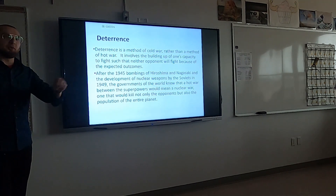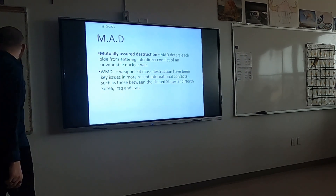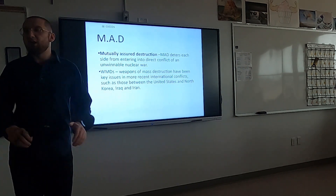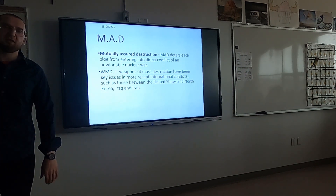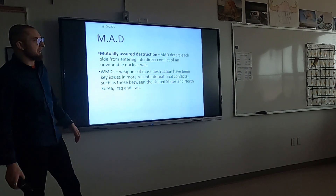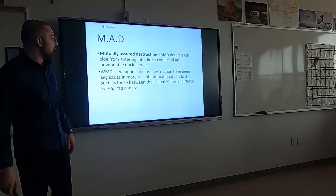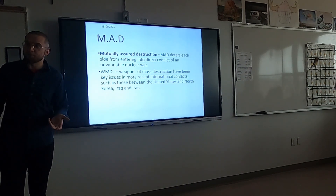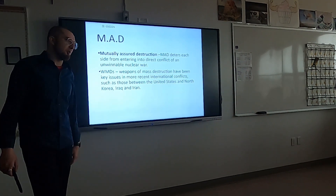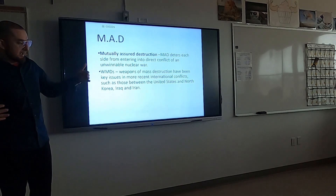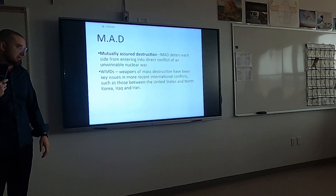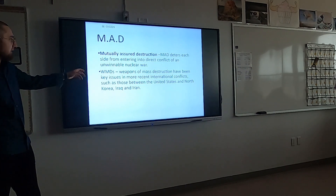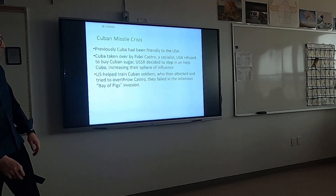Nuclear weapons were a deterrent for the Soviet Union. MAD — mutually assured destruction — refers to the use of nuclear weapons to the point where everything is destroyed. John F. Kennedy was quoted as saying the US had enough nuclear weapons to destroy the earth five times over. Both ideological sides had plenty of nuclear weapons that could destroy the entire planet, and that's mutually assured destruction.